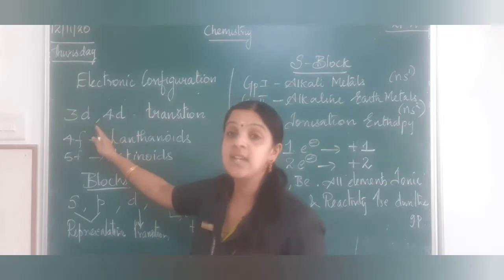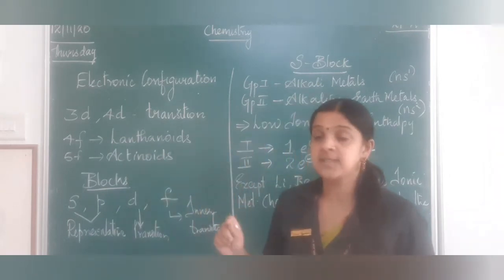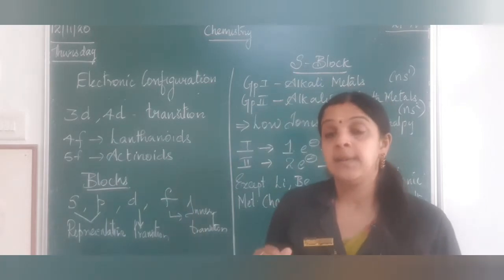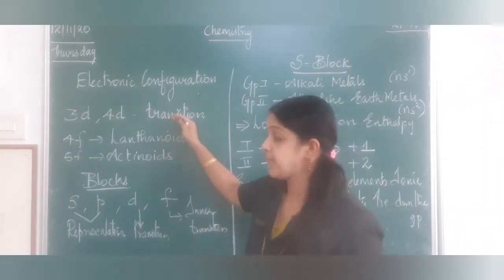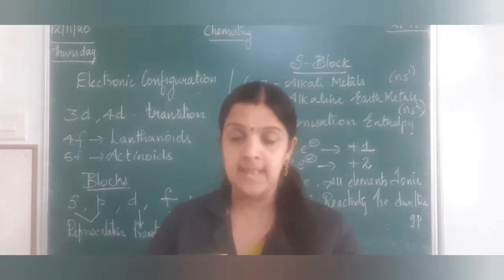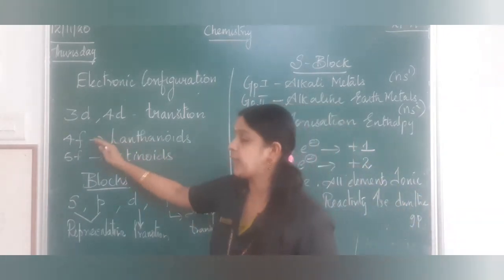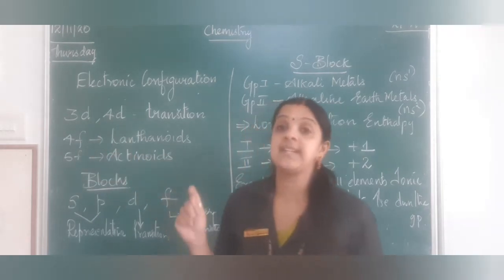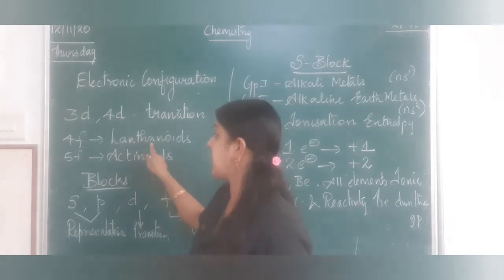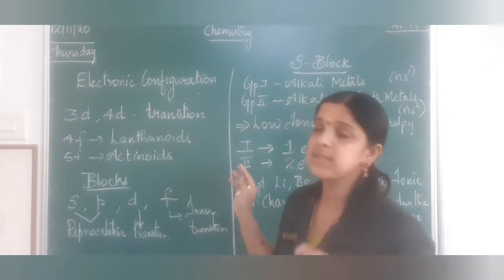Whenever 3D comes, it is the D block element. So 3D and 4D — the transition series starts. Electrons get filled from 3D1 to 3D10. After the transition series we have the inner transition series, kept inside the periodic table. Those are 4F and 5F, where the F subshell can take a maximum of 14 electrons. So 4F gives us lanthanoids and 5F gives us actinoids.